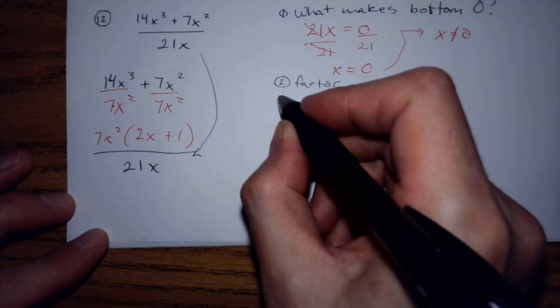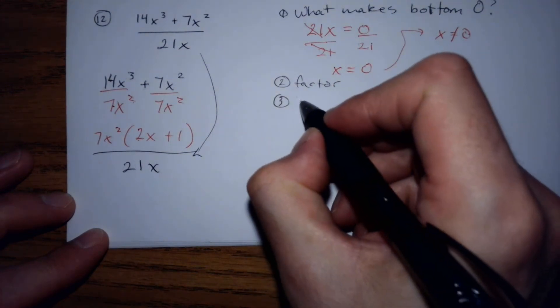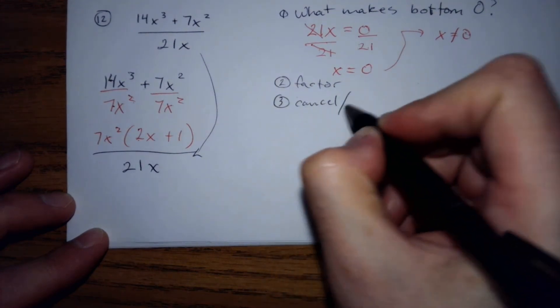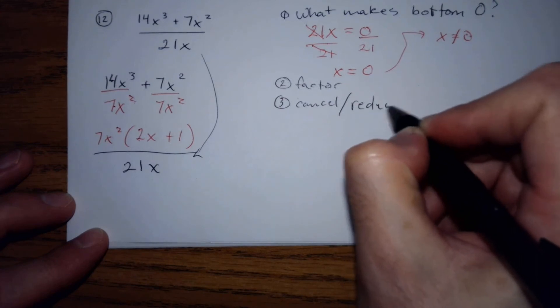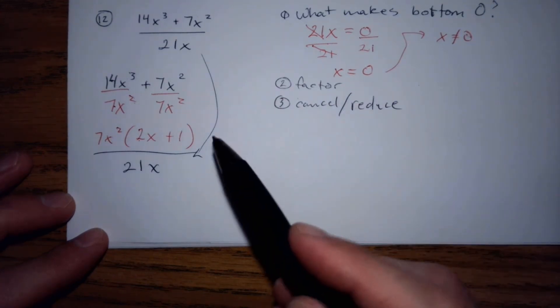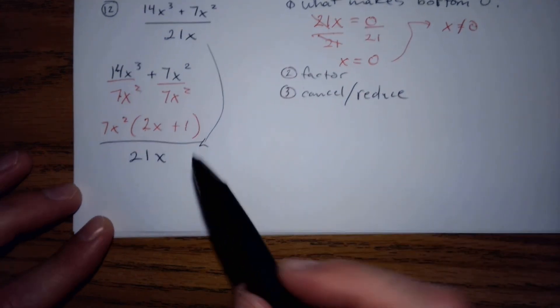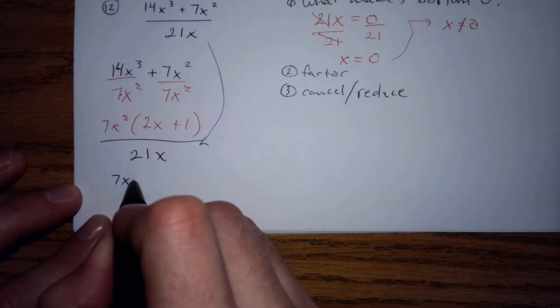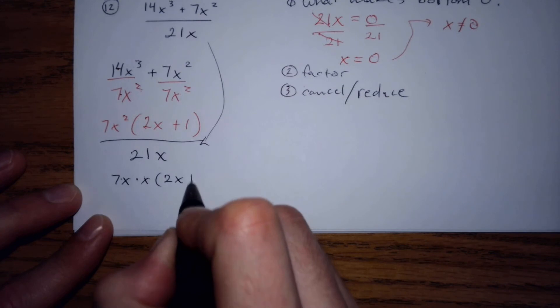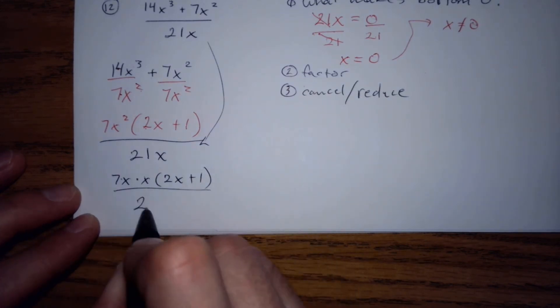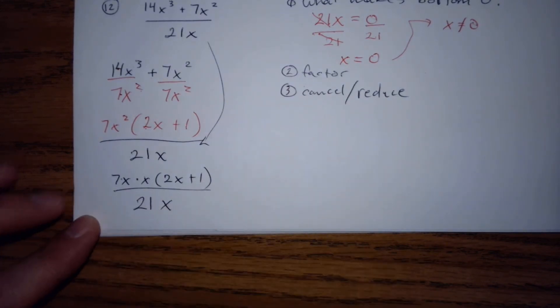I've factored, third step, cancel or reduce. Just to make it super clear, maybe I'll write it like this. One of the x's cancels.